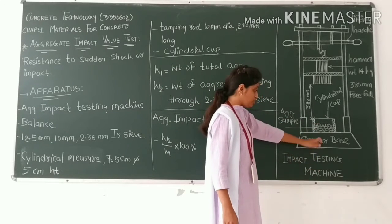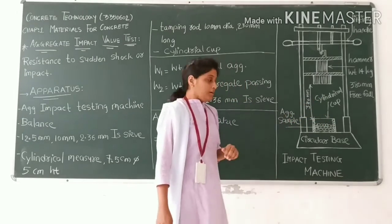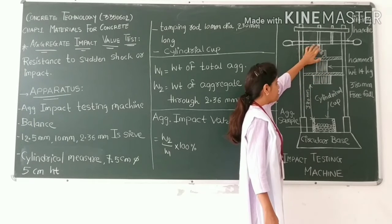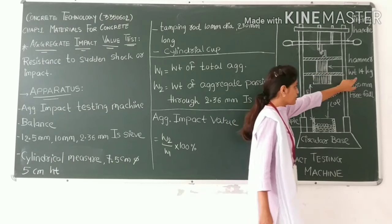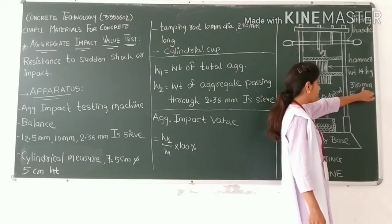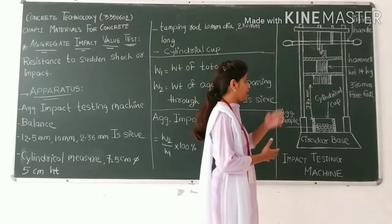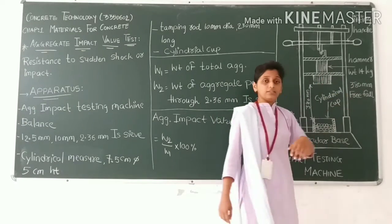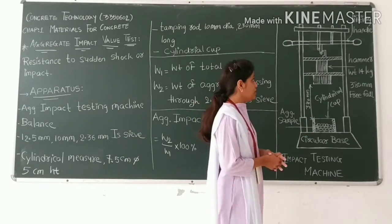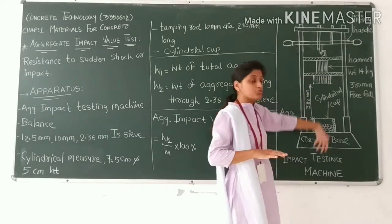The impact testing machine consists of a cylindrical cup with a circular base. There is a lifting handle and a hammer. The hammer has a total weight of 14 kg and is raised to a height of 38 cm before being dropped.